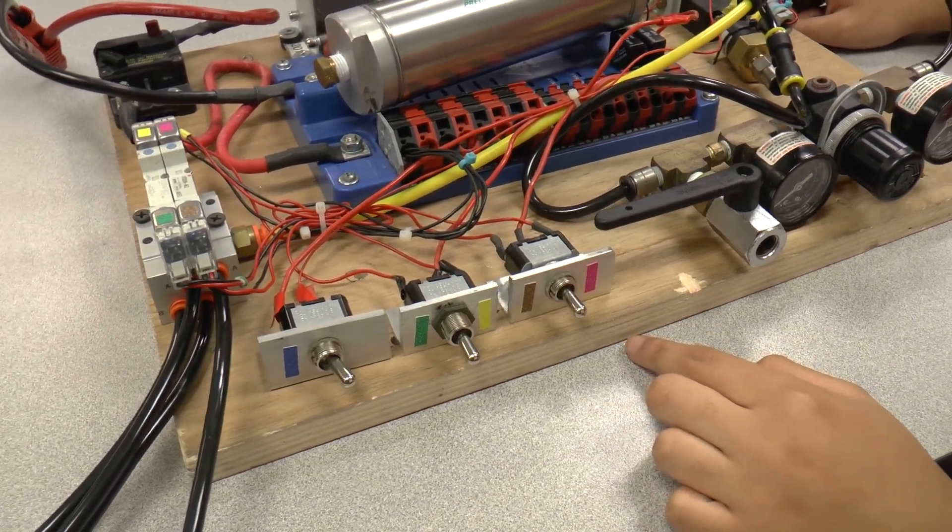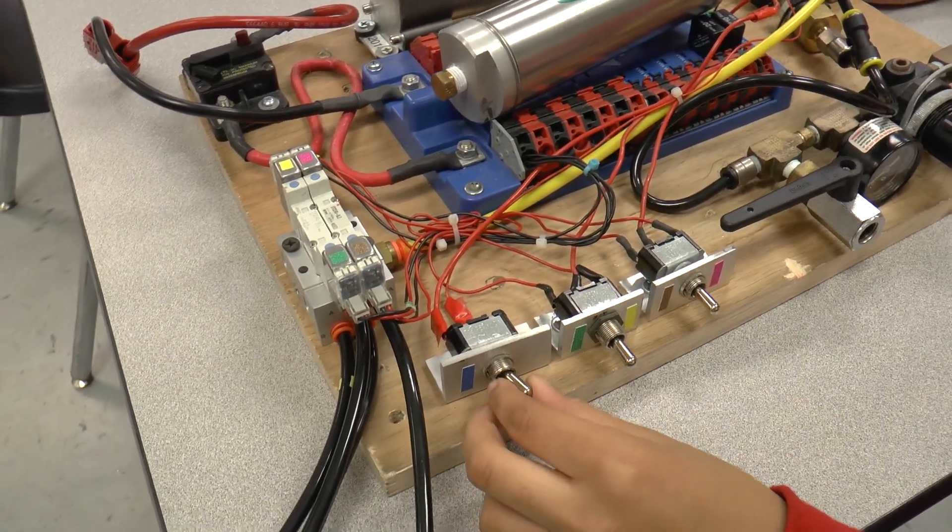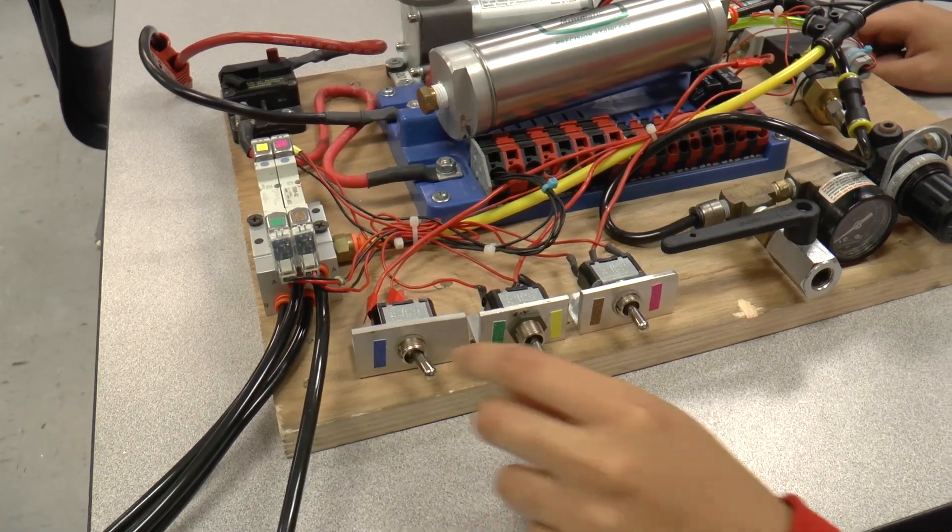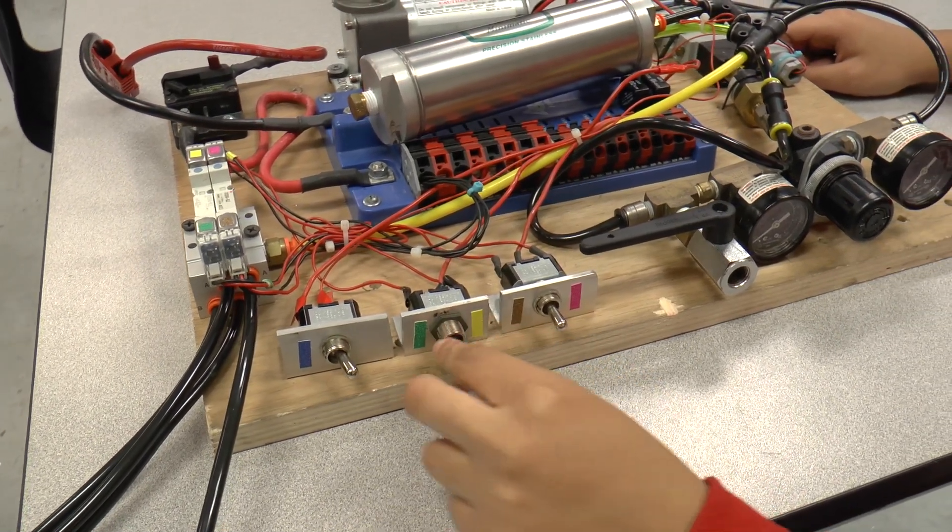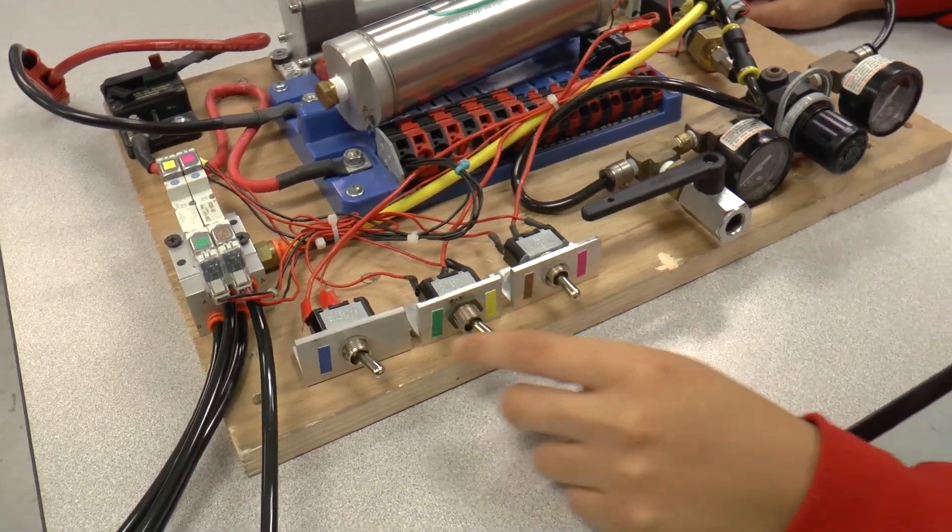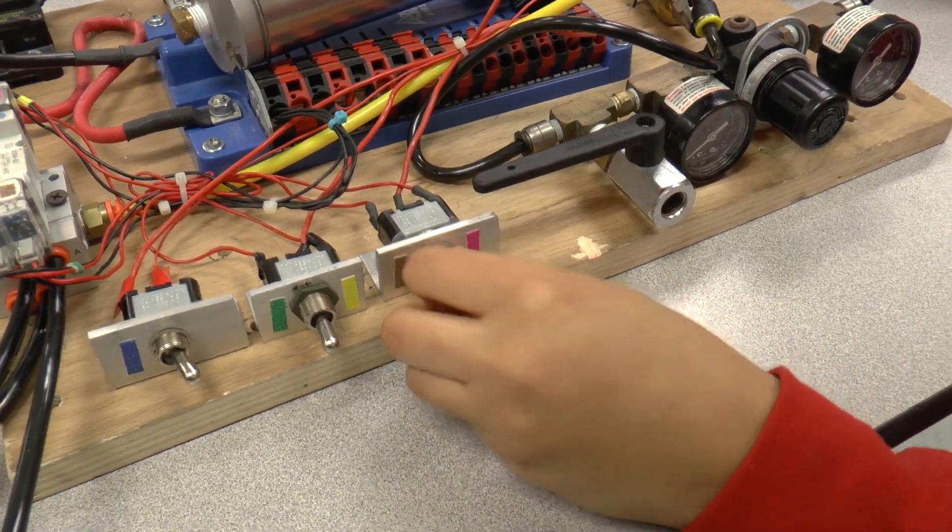Depending on which way you want the solenoids to actuate, you flip the switch that controls that particular one. This one is just off and on. This one is off for both, or on for the green one or for the yellow. And this one's on for brown and for pink.